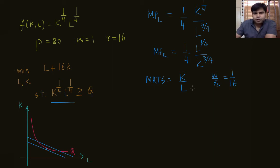At the optimum, the slope of the isoquant must equal the slope of the isocost. So we know that k by l must equal 1 by 16, which means l equals 16k.